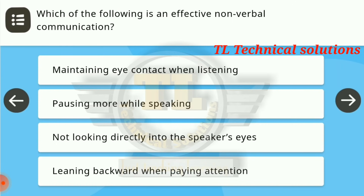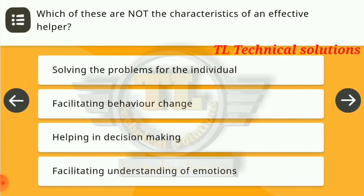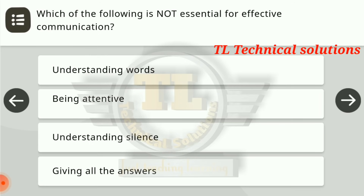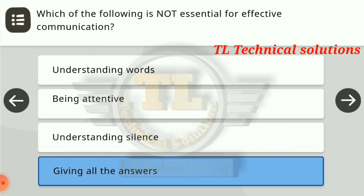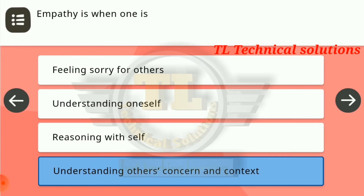Next question: which of the following is an effective nonverbal communication? The right answer is maintaining eye contact when listening. Next question: which of these are not the characteristics of an effective helper? Solving the problems for the individual is the right answer. Which of the following is not essential for effective communication? Giving all the answers is the right answer. Empathy is when one is understanding others' concern and content — the last option is the right answer.